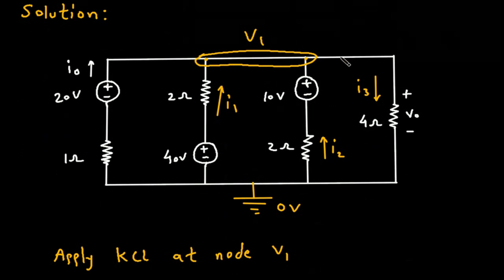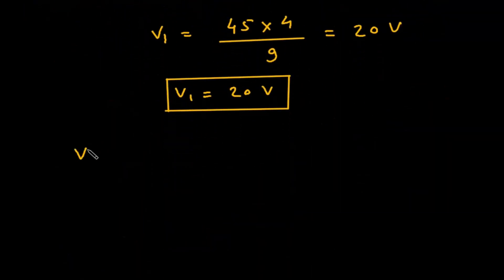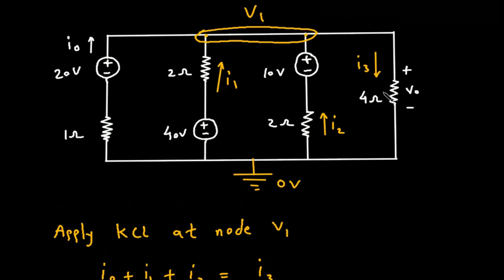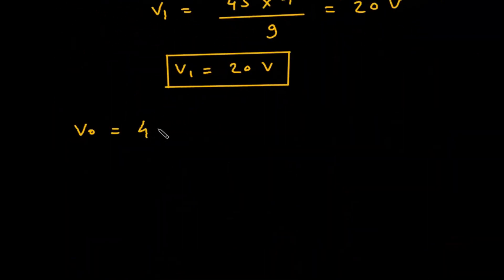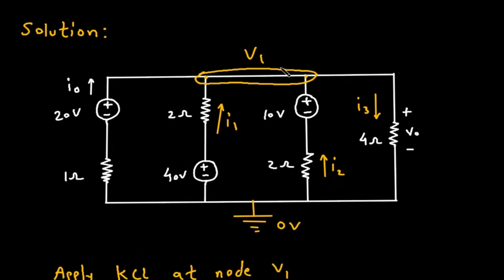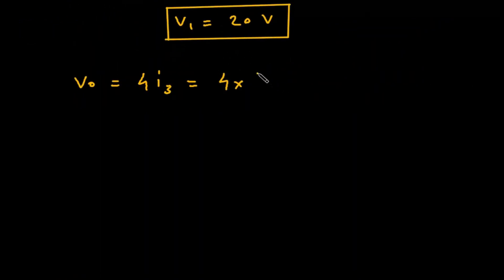Now we have the value of V₁. We have to find V₀. V₀ equals 4I₃, where I₃ is (V₁ - 0)/4. So this simplifies to V₁. Therefore, V₀ equals V₁, which is 20 volts.